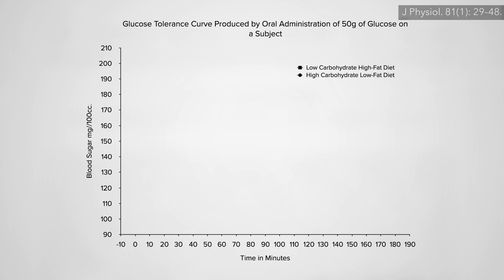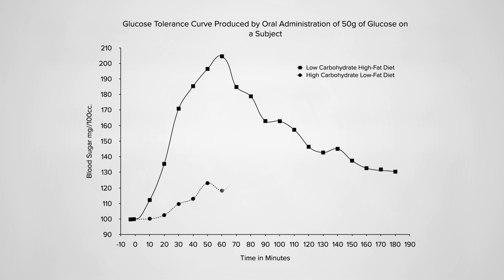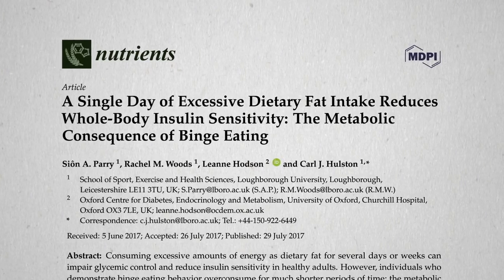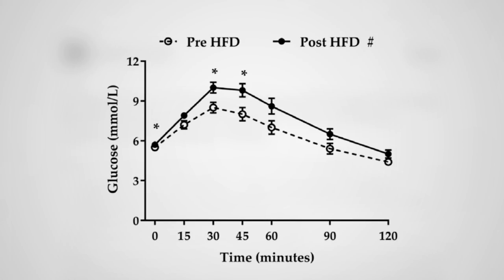One week on an 80% fat diet, you can quintuple your blood sugar spike in reaction to the same carb load compared to a week on a low-fat diet. Even a single day of excessive dietary fat intake can do it.